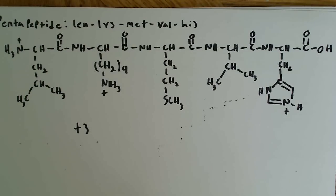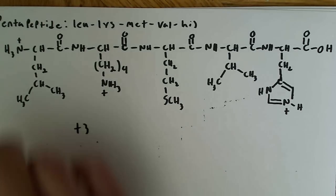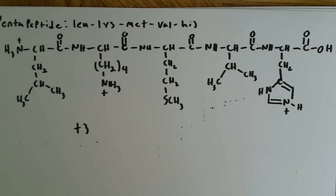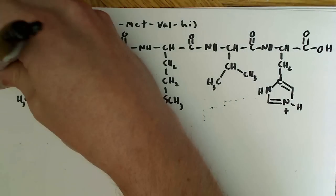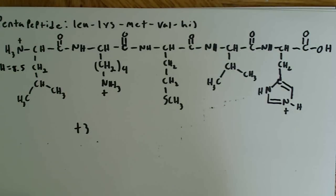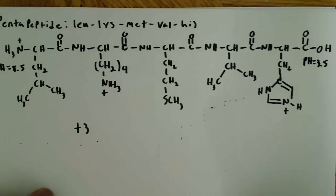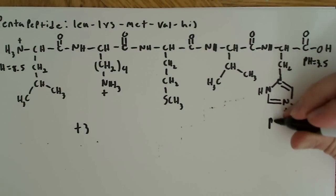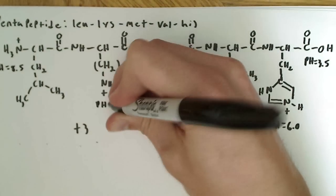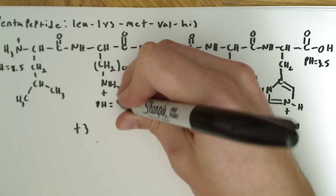And now what you want to do is go back and look at your chart and see which values each of these side chains and the amine group and the carboxyl group in the backbone lose their protons at. So this one loses its proton at a pH of 8.5, the carboxyl group loses the proton at a pH of 3.5, histidine loses its proton at a pH of 6, and lysine loses its proton at a pH of 10.5.